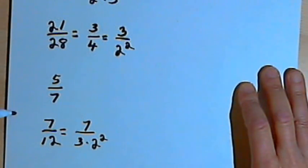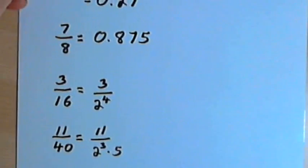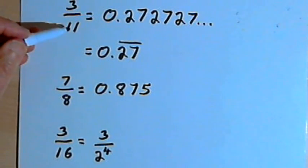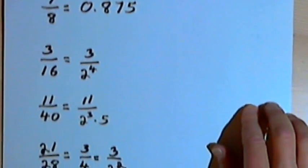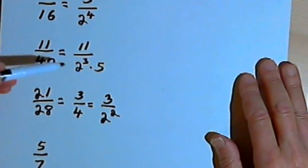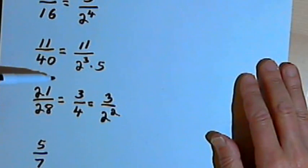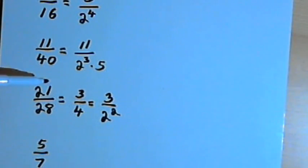So once again, the basic rule says if you've got a prime factor in the denominator other than 2 or 5, like a 3 or a 7, or an 11, the first one we started with, you're going to get a repeating decimal. If you don't have anything other than 2 and 5, then you're going to get a terminating decimal.